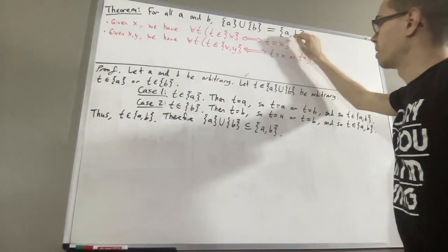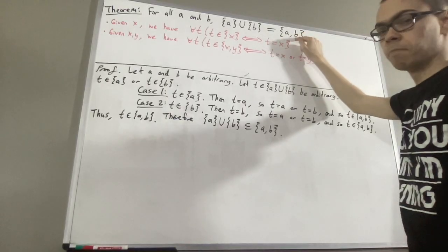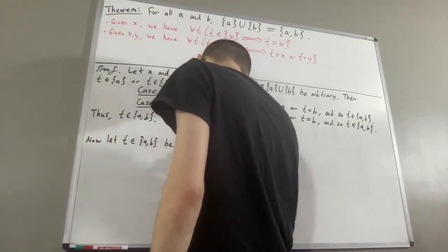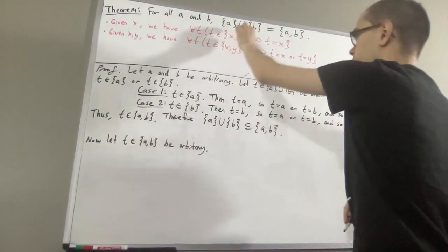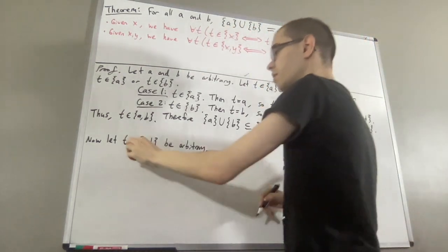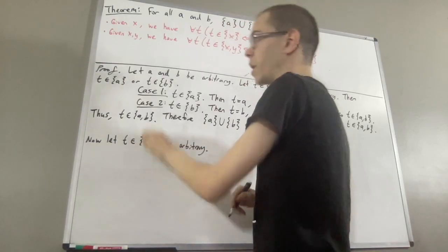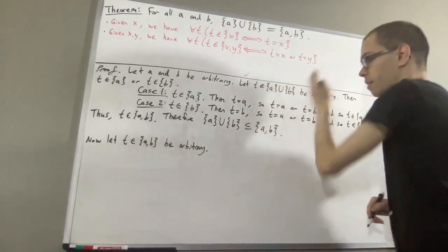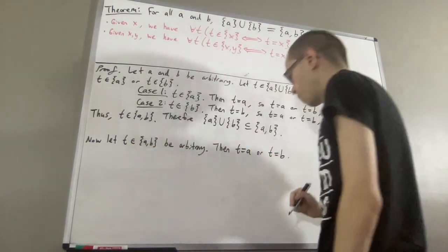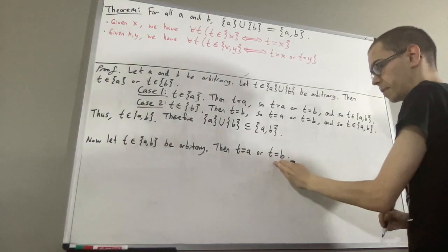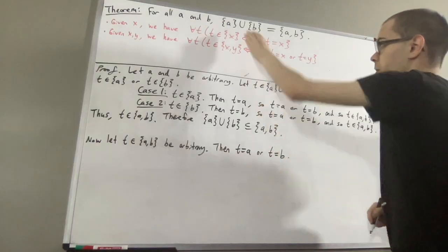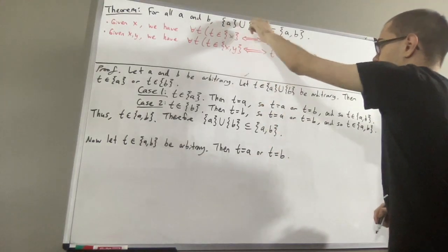Now we are going to show that this set is a subset of this set. To show that, let's give ourselves an arbitrary element of the pairset of A and B — I'll call it T. From here, we want to show T is an element of the union of the singleton set of A and the singleton set of B. Now since T is an element of the pairset of A and B, by the property that pairsets satisfy, that tells us T is equal to A or T is equal to B. We are going to split this up into two cases, and in each case we are going to show that T is an element of the union of the singleton set of A and the singleton set of B.